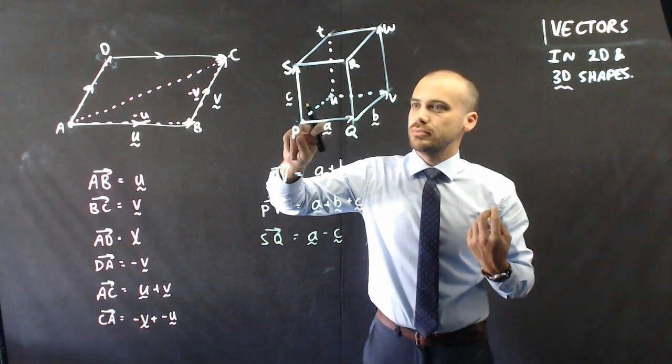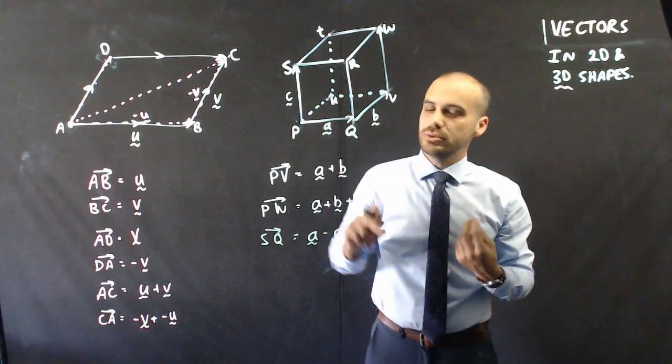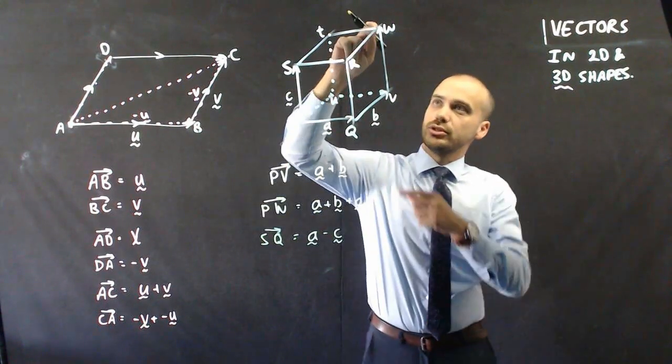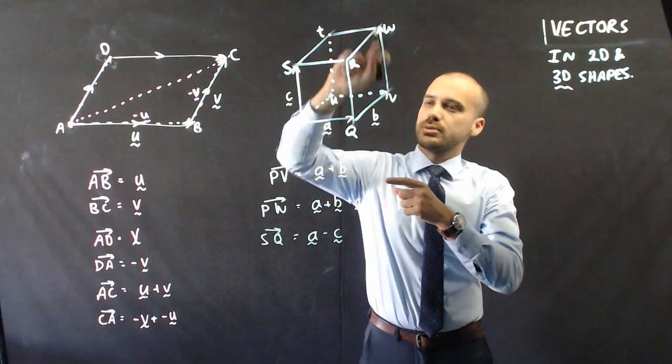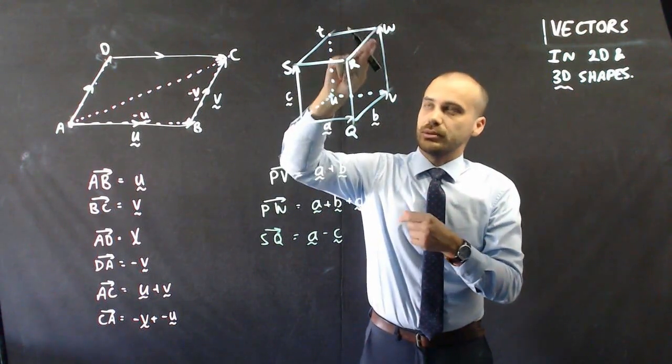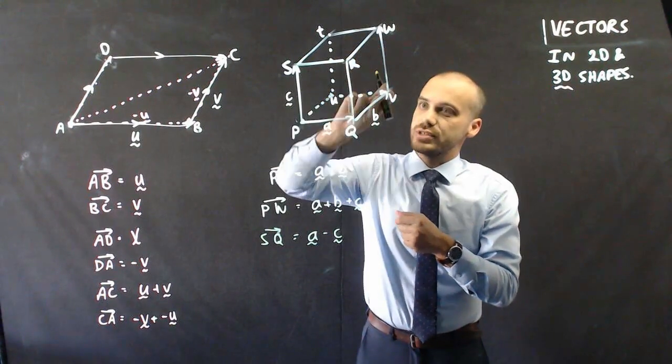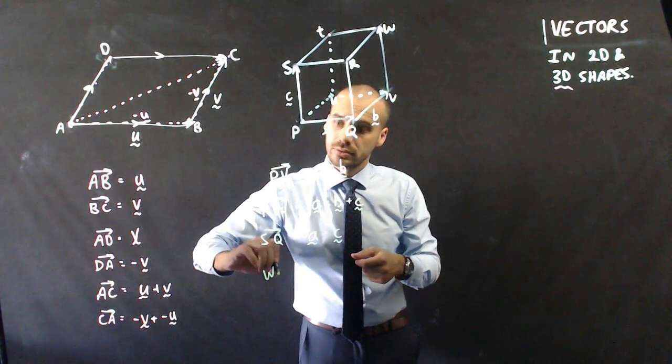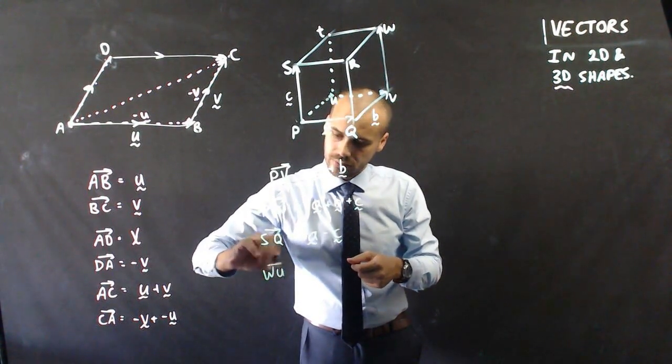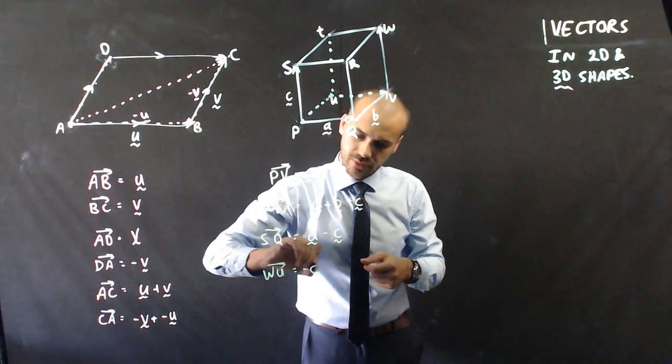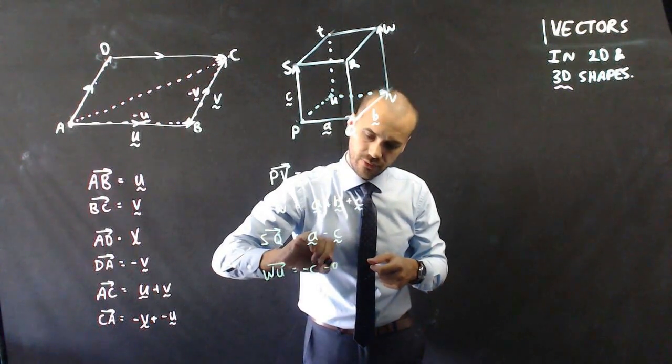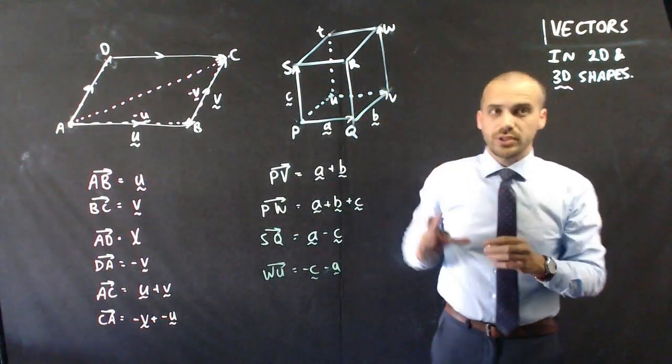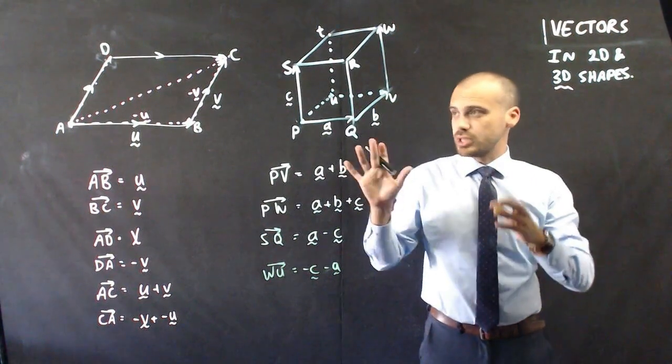Let's go from w to u. From w to u, it's the same no matter which sort of trail I move along. But if I move along here I'd have to go negative c, negative a. Negative c, negative a. Hopefully you can see all of that, you've got to see it in three dimensions.